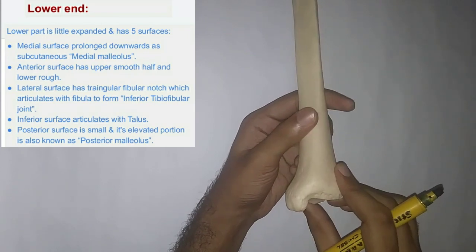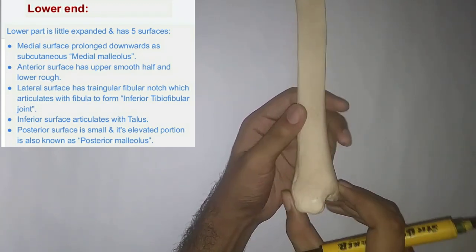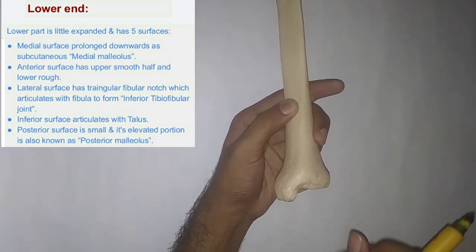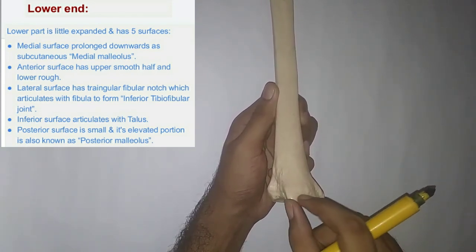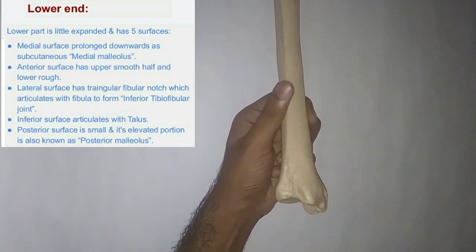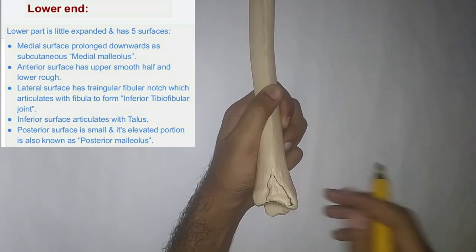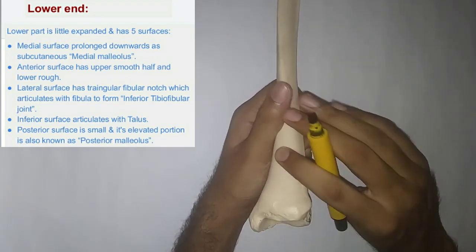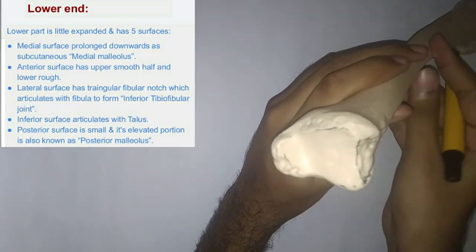The anterior surface of the lower end has an upper smooth part and a lower rough part. The medial surface has a downward projected subcutaneous structure known as the medial malleolus. The posterior surface has a protuberance known as the posterior malleolus. The lateral surface has a triangular fibular notch which articulates with the fibula to form the inferior tibiofibular joint. The inferior surface articulates with the talus to form the ankle joint.